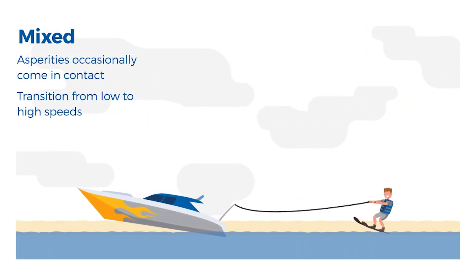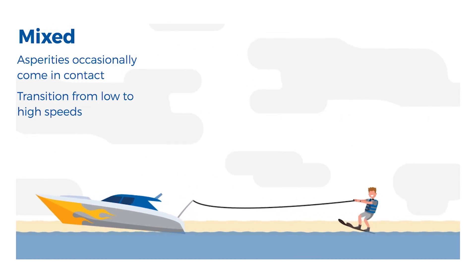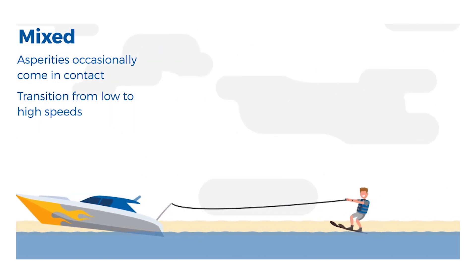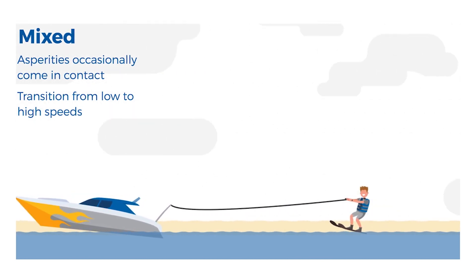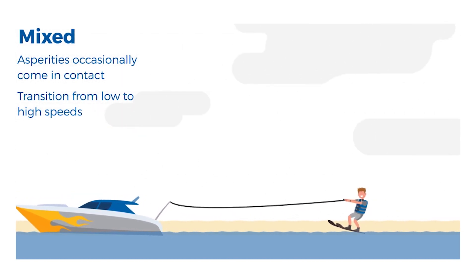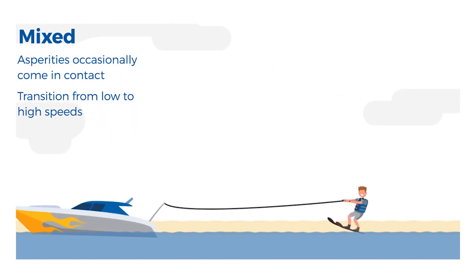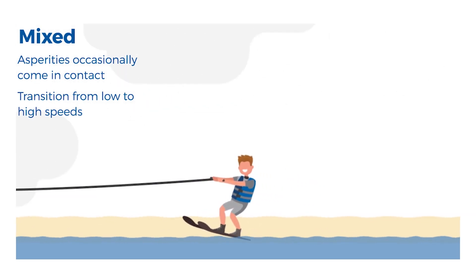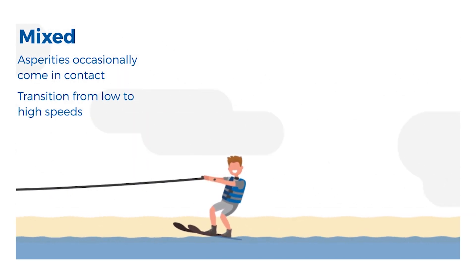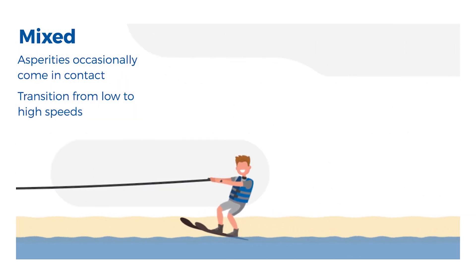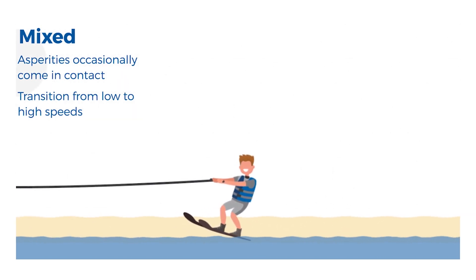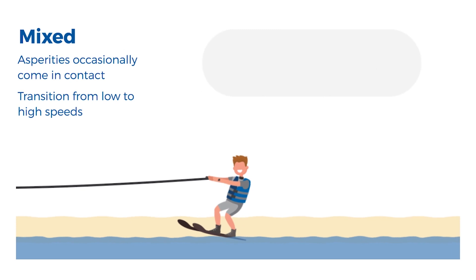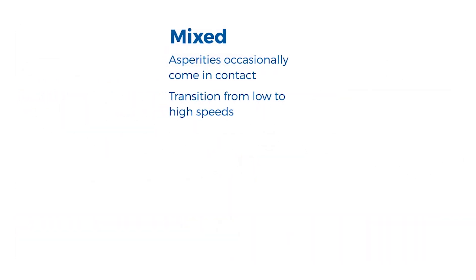Finally, imagine you gave your boat maximum throttle. At first, the boat's nose will come down a bit as the boat is accelerating, but you haven't reached the maximum speed the boat can go. At this point, your water skis are balanced and you are cruising along under similar conditions to mixed lubrication.